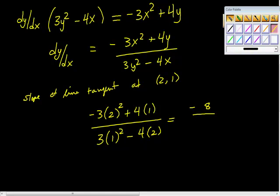Negative 8, this is 3. 3 minus 8 is negative 5. So the slope of our line tangent is 8/5, all right?